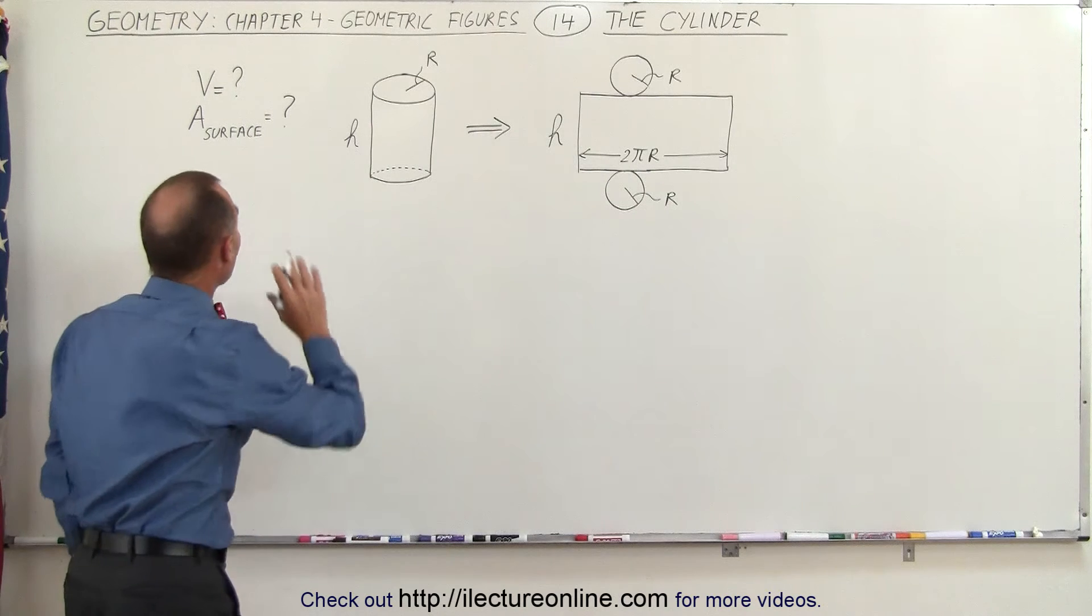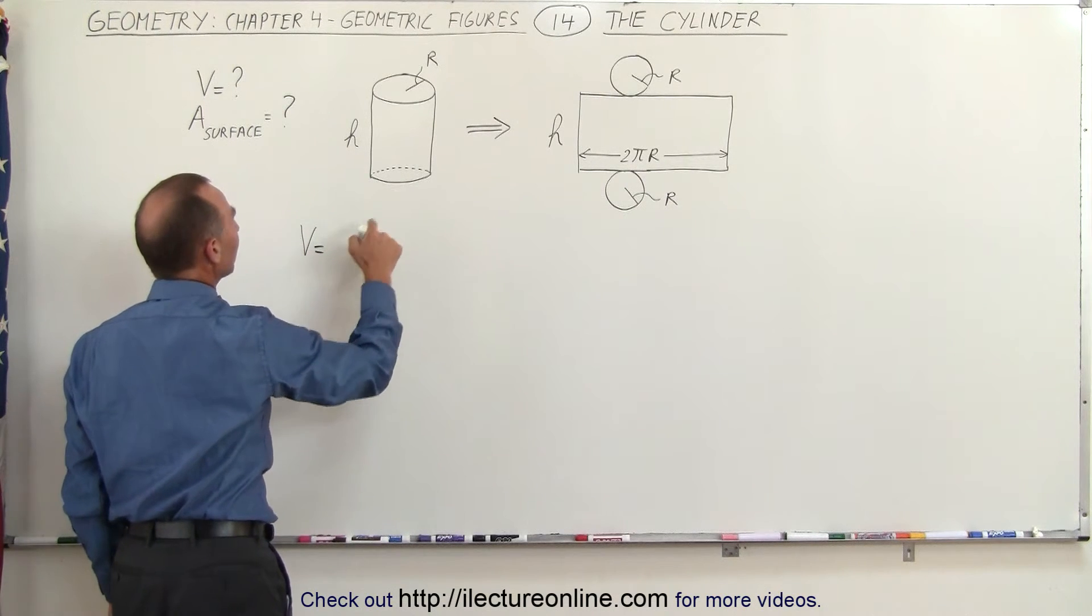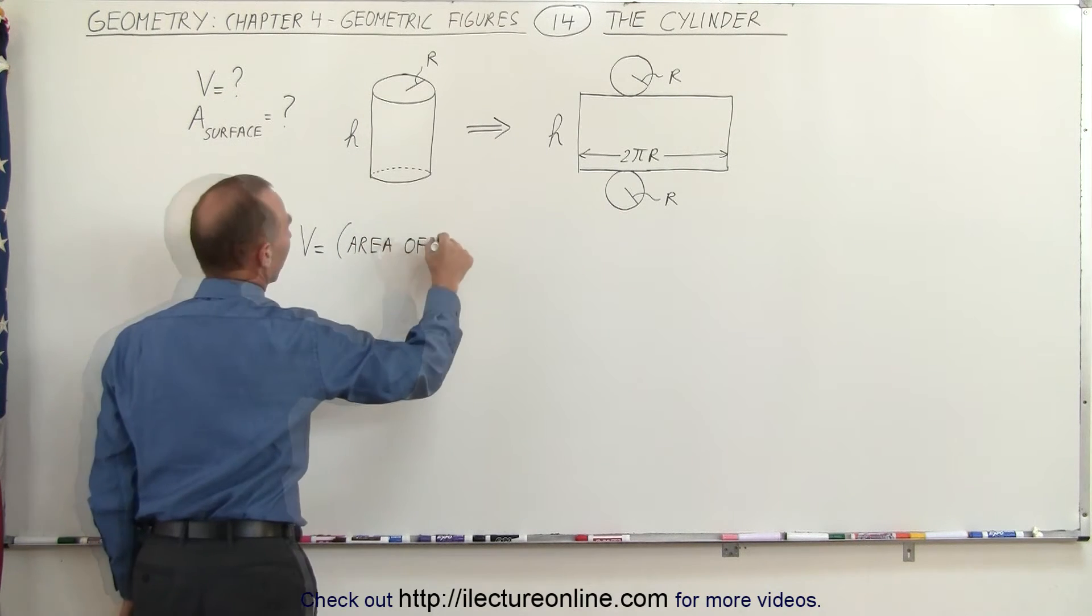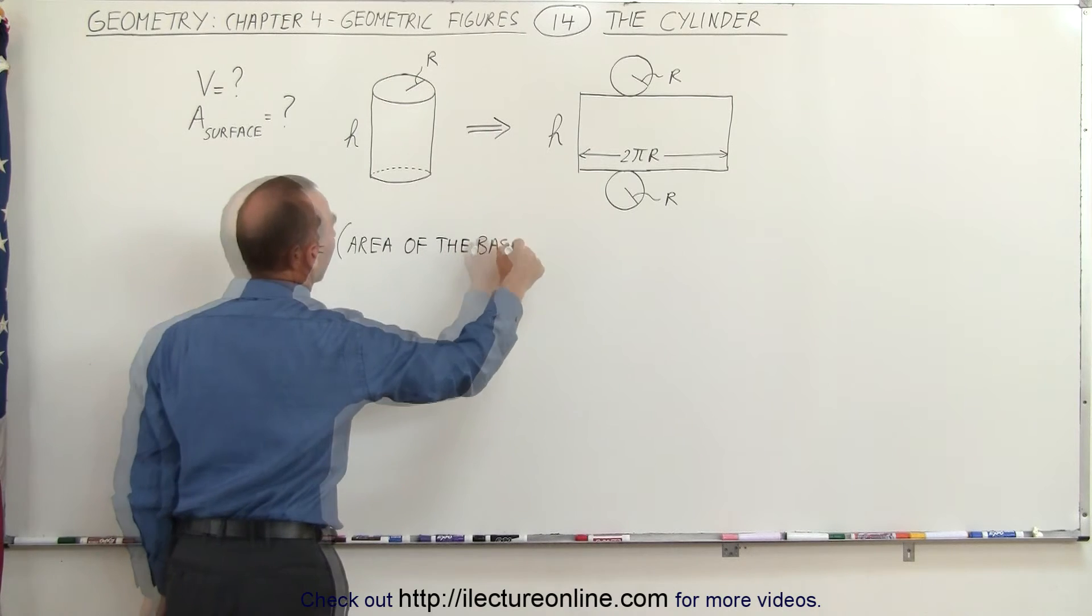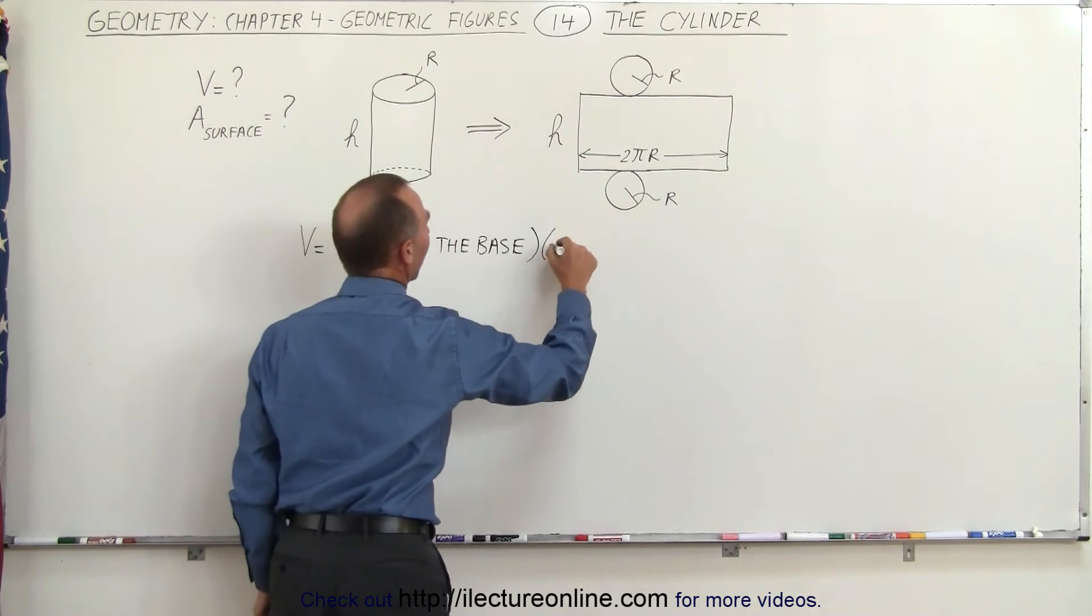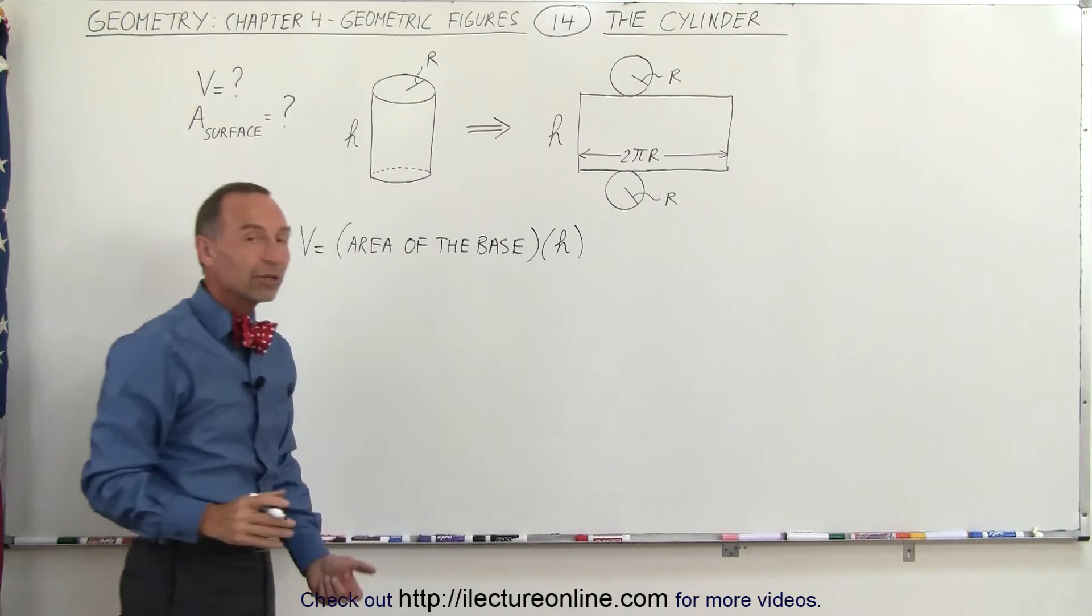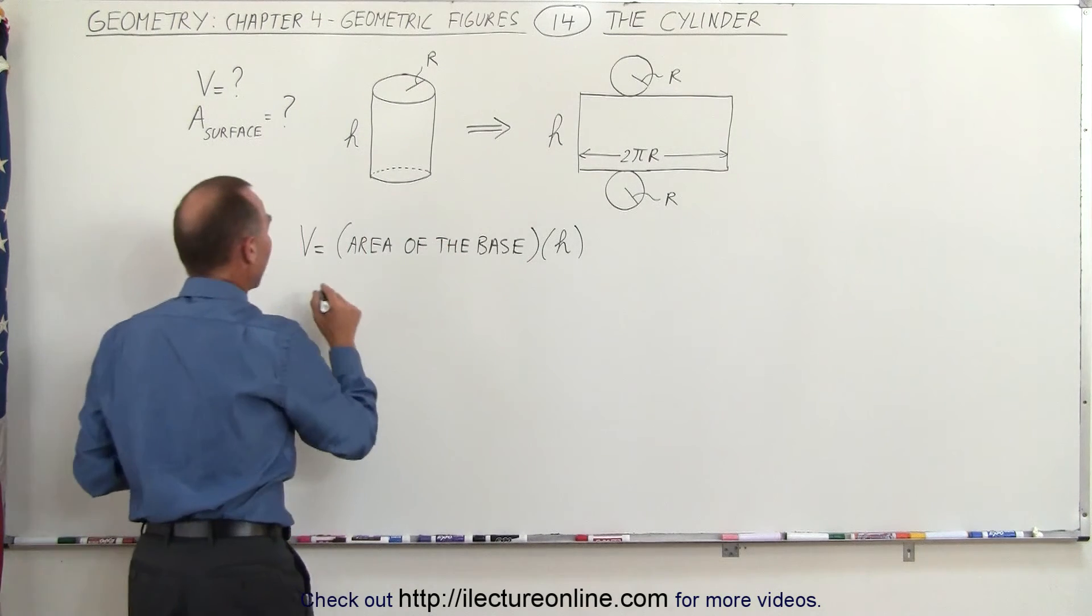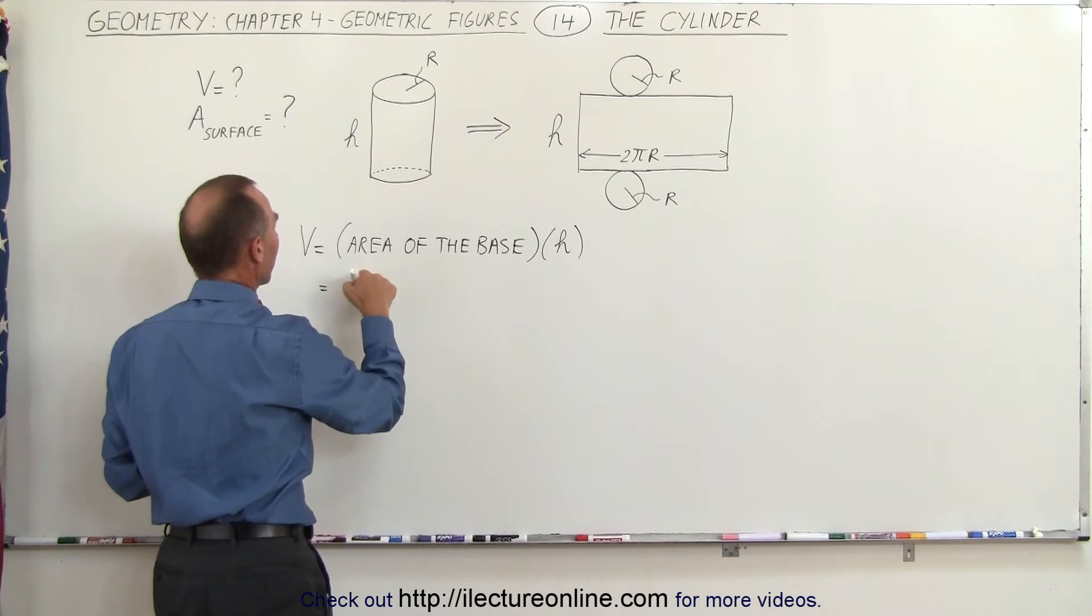To find the volume of the cylinder, what we need to do is take the area of the base, and I'll just write it out, so it would be the area of the base, and then multiply that times the height. And that will give us the volume. That's typically the formula we use for any object that has volume.